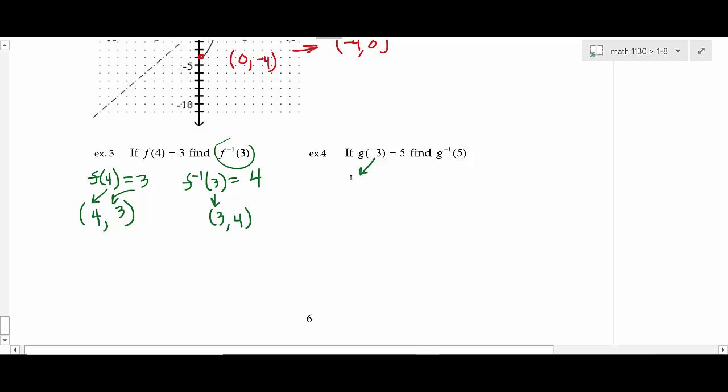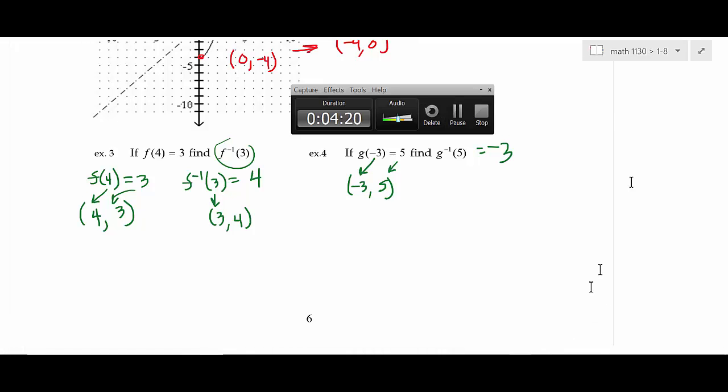Next one's the same thing. That would say when X is negative three, Y would be five. So what's the answer to G inverse? Negative three. Everybody understand what I did on that page? That's real simple kind of way to wrap up inverses. We did the more difficult part of that section.